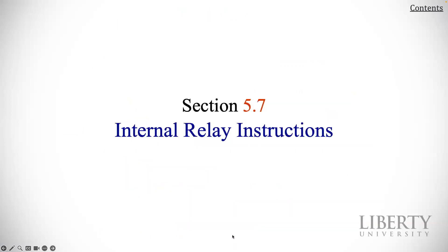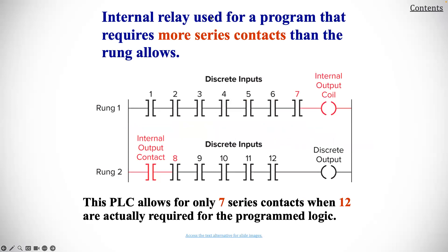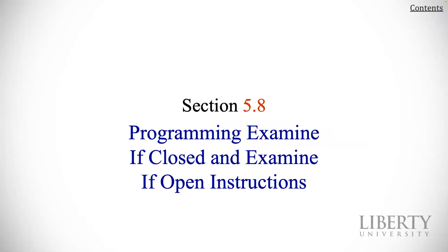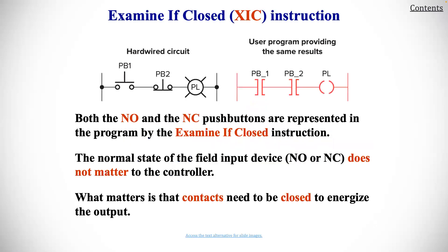Internal relay instructions: internal relays are used for a program that requires more series contacts than the rungs would allow. For this case, the PLC allows for only seven series contacts when 12 are actually required for the programming logic. For programming, we examine the 'examine if closed' and 'examine if open' instructions — XIC instructions.